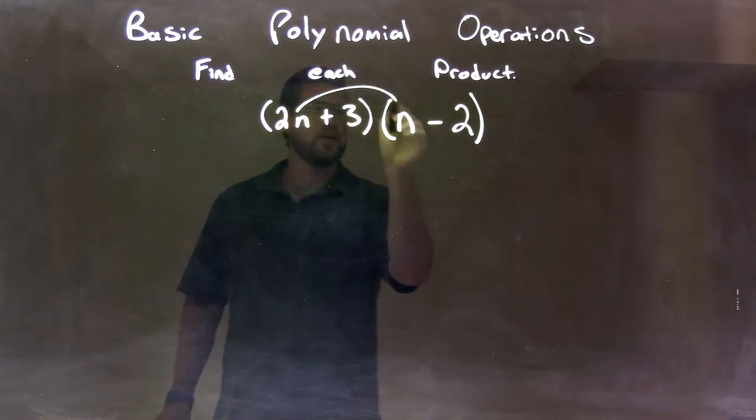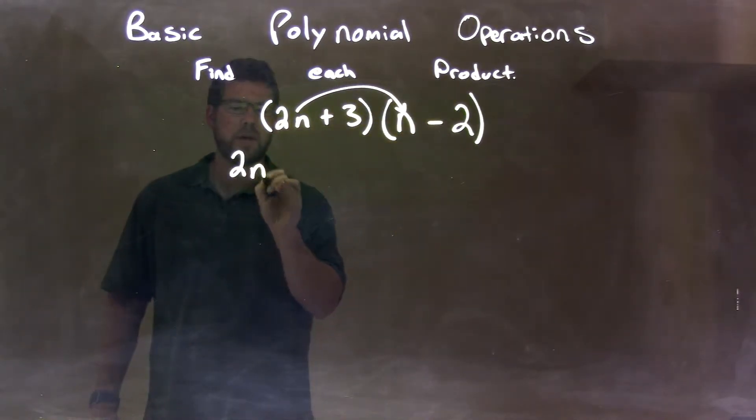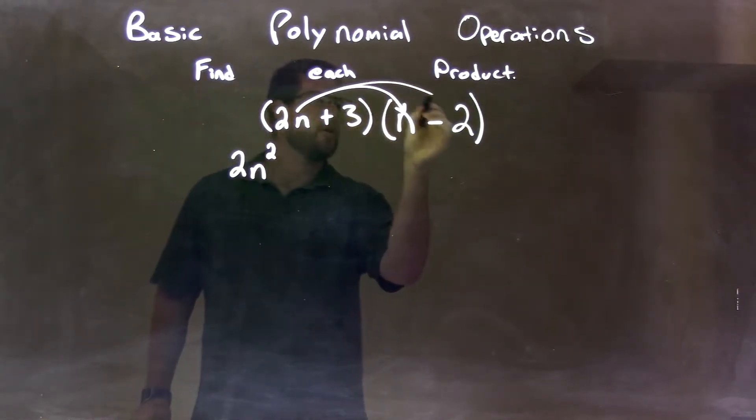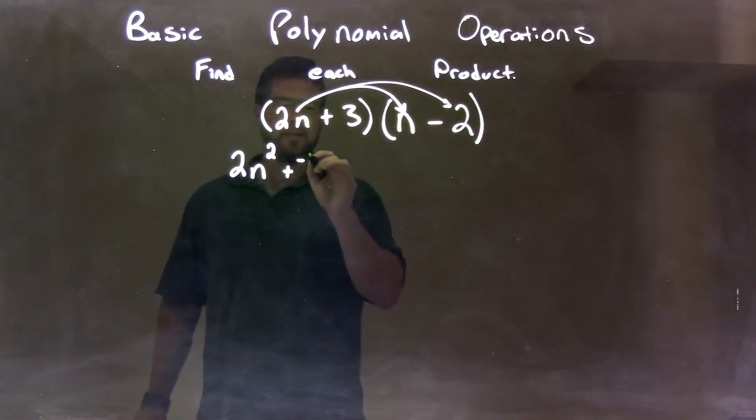So we have 2n times this n gives us 2n squared. Then we multiply this 2n by this minus 2, so we make plus and negative, we're just minus, but plus and negative here. So we get a negative 2 times 2n is a negative 4n.